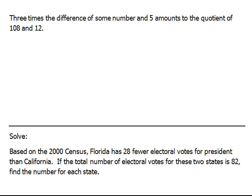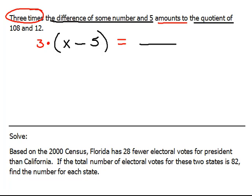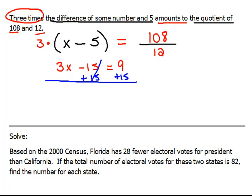The last one says three times the difference of some number and five amounts to the quotient of 108 and 12. Three times the difference of some number and five would be 3(x - 5). Amounts to is a key word for equals. The quotient of is division, 108 and 12. So, we need to go ahead and do our distribution, and then finish solving the equation to end up with x = 8.